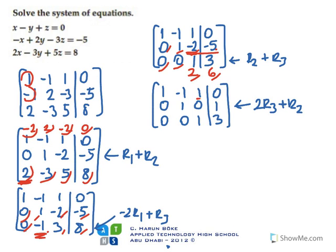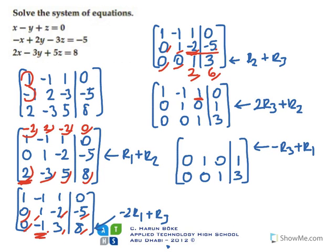Now, to make this entry zero, I will multiply the third row by minus one and add to the first row. Multiplying by minus one gives minus one and minus three. Adding these: one and minus one stay; minus one plus one gives zero; and minus three plus zero gives minus three.